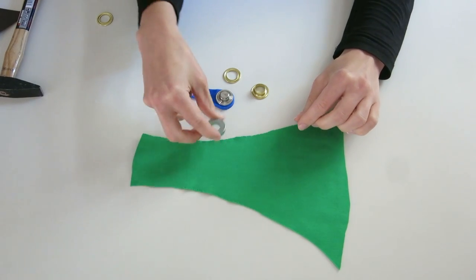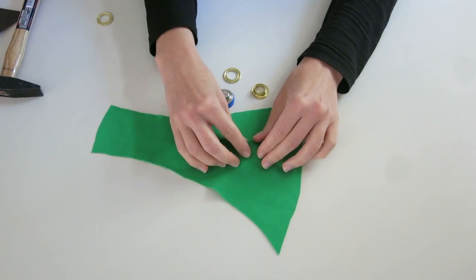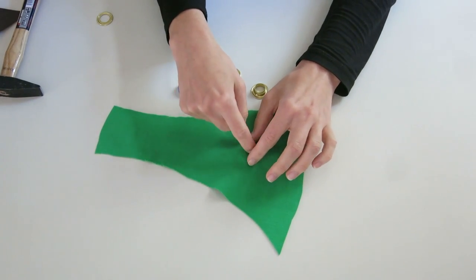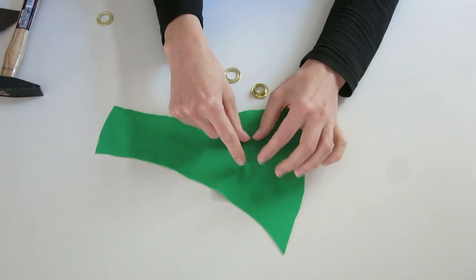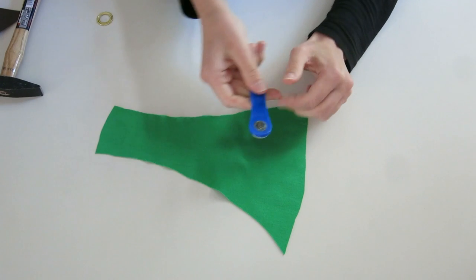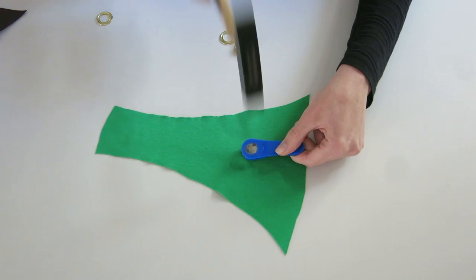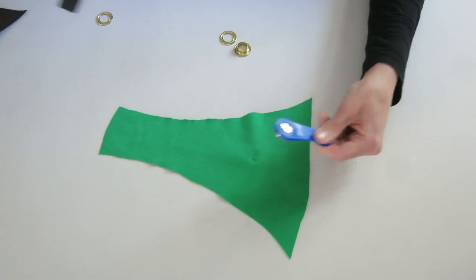Take care that the even surface is on top and put your fabric on top of it. Then you are using the eyelet setting tool to punch in a hole with a few hammer strokes.